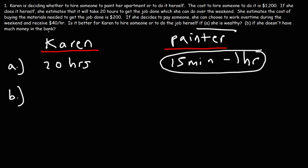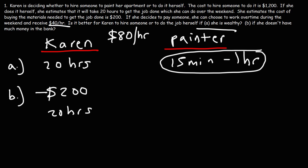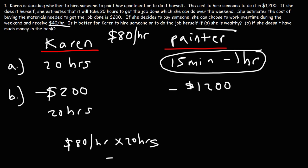Now what if she were earning more money — let's say if she works overtime she could earn $80 an hour. Is it better for her to paint the apartment, or is it now better to hire someone? If she does it herself, she pays $200 — her bank account decreases by $200 — and this costs her 20 hours of time. If she hires the painter, she pays $1,200, so her bank account decreases by that amount, but it saves her 20 hours. She can then go to work and use those 20 hours to earn money.